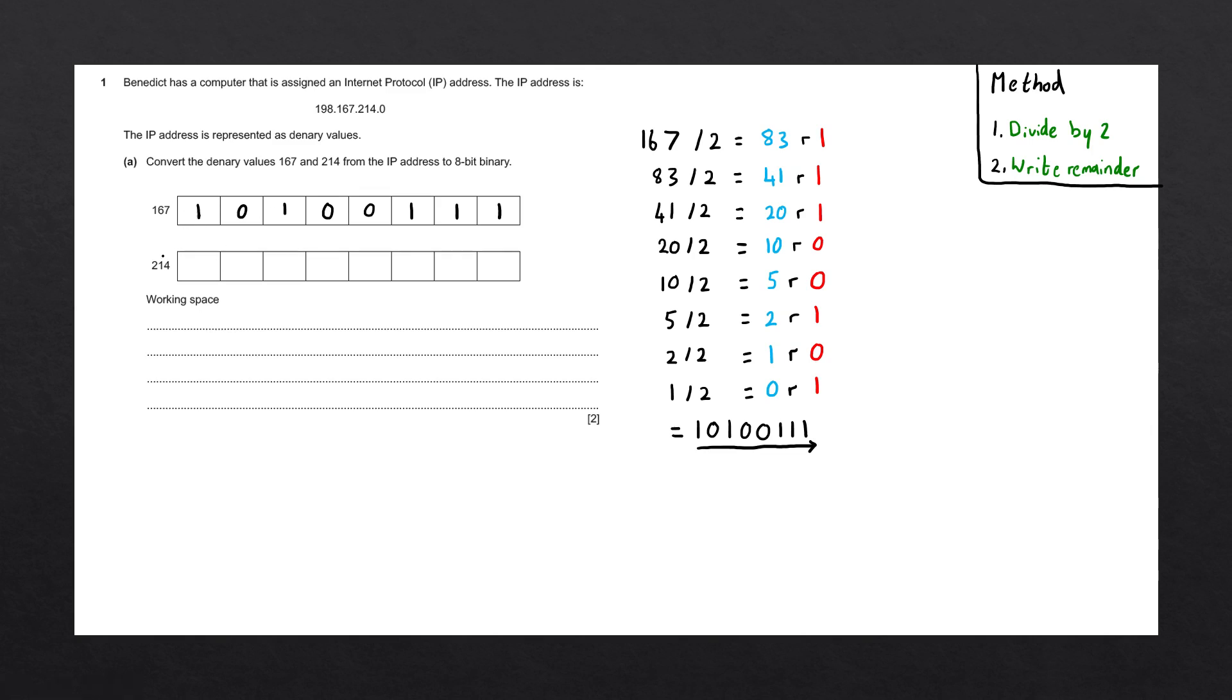We now have to convert the denary number 214 into binary. And we could follow the same method. However, there is a slightly faster method when converting denary numbers into binary. It doesn't matter which one you use in the exam, but whichever one you feel more comfortable with should be the one that you use.